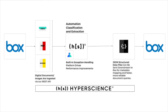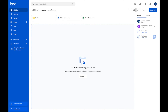Now, with the Hyperscience for Box integration, the Hyperscience platform picks up documents from a Box folder, extracts the data from those documents, then passes the extracted values back into Box, enriching the metadata of the documents stored in Box. Let's walk through an example of a financial services organization that needs to extract data from a brokerage account form so they can populate the metadata template in Box.